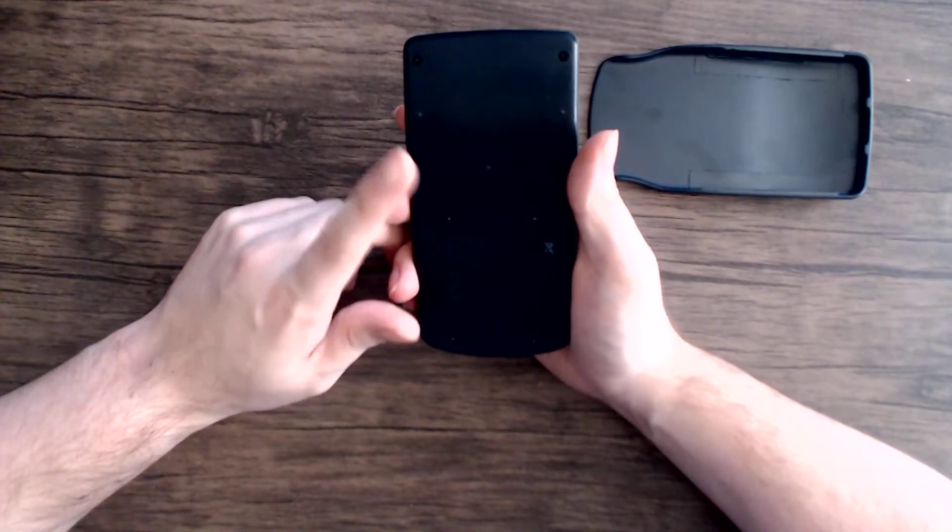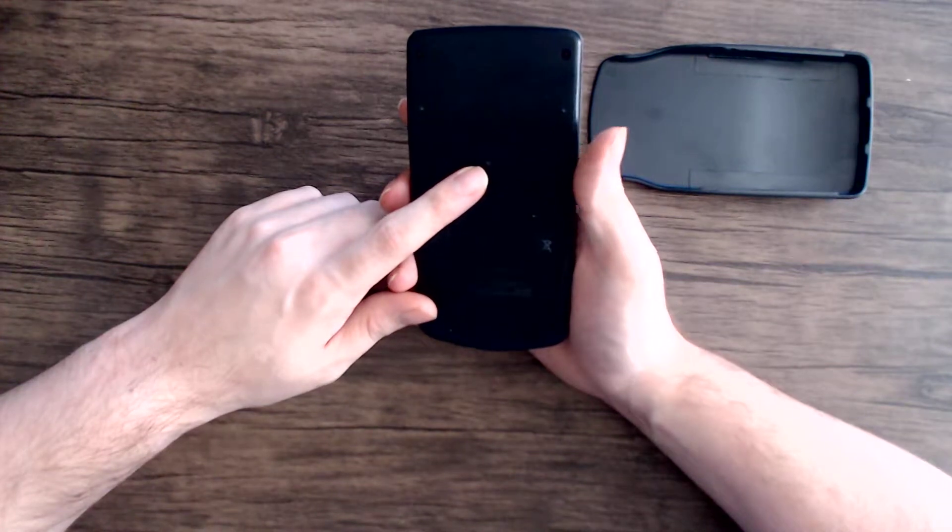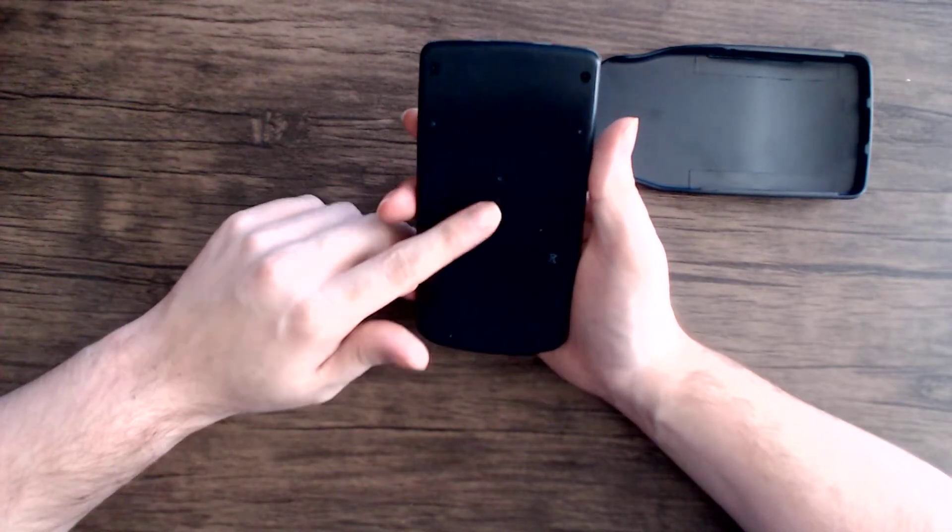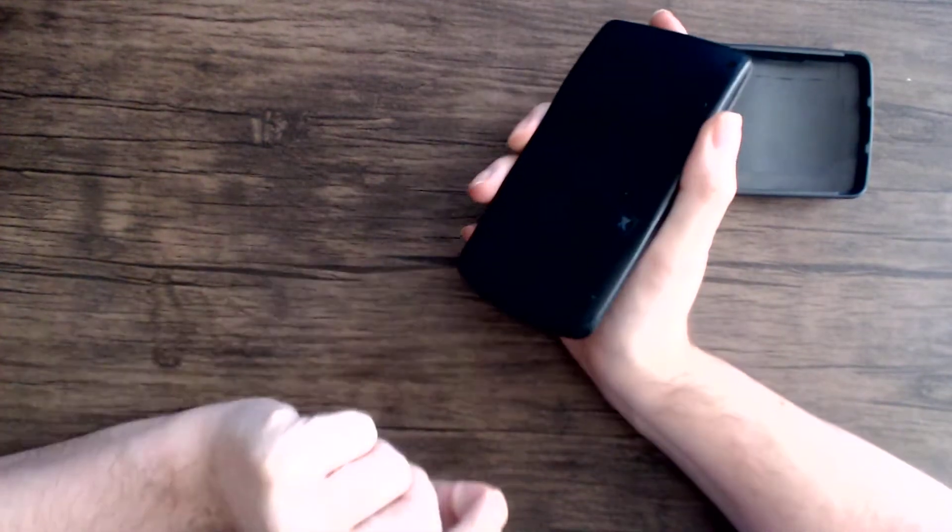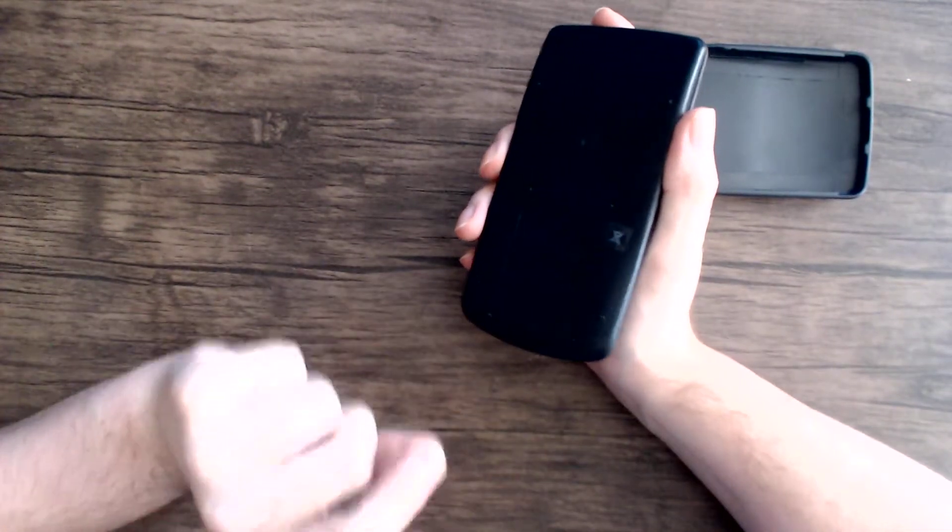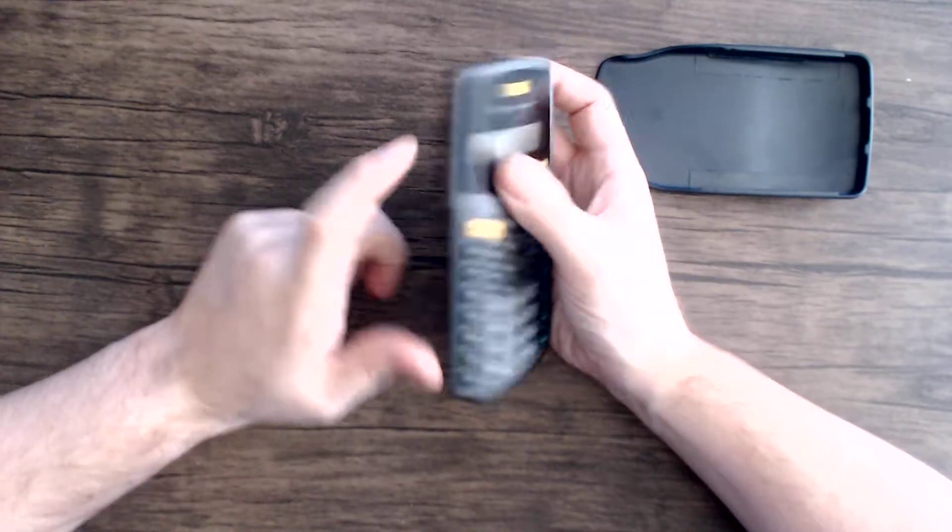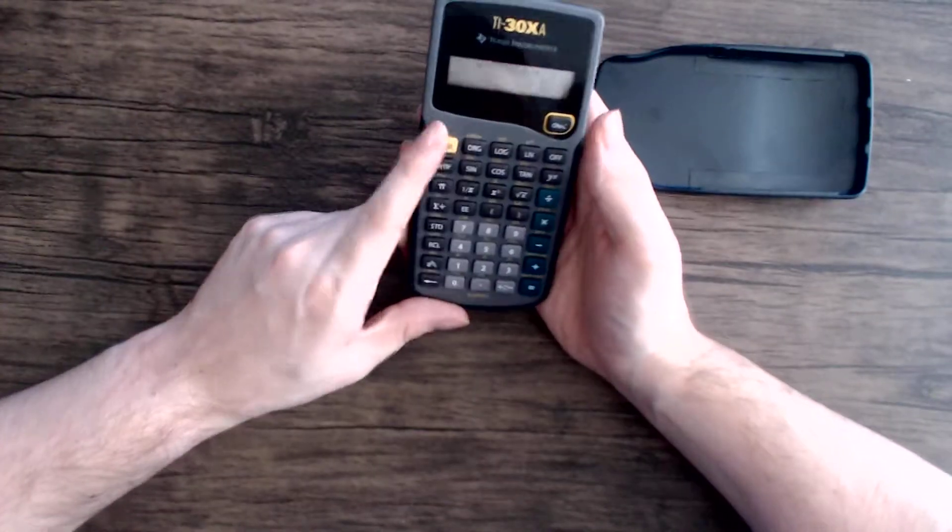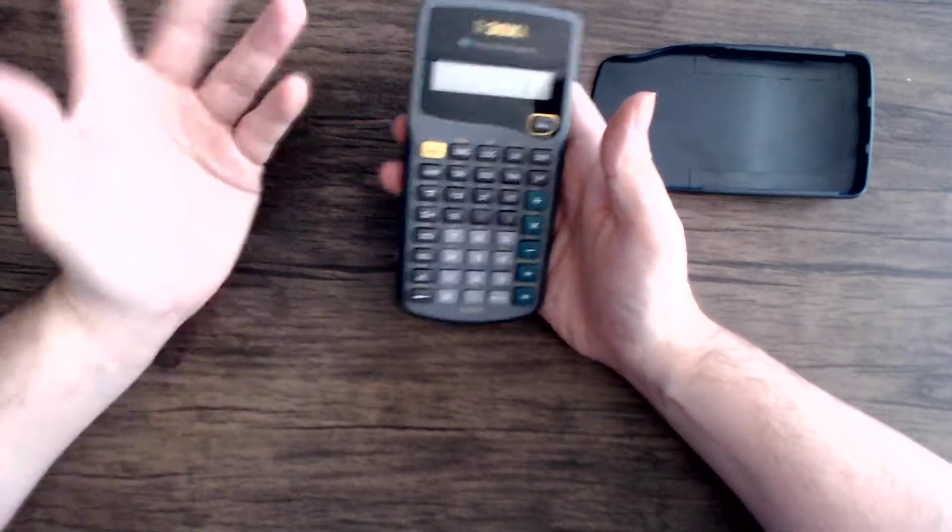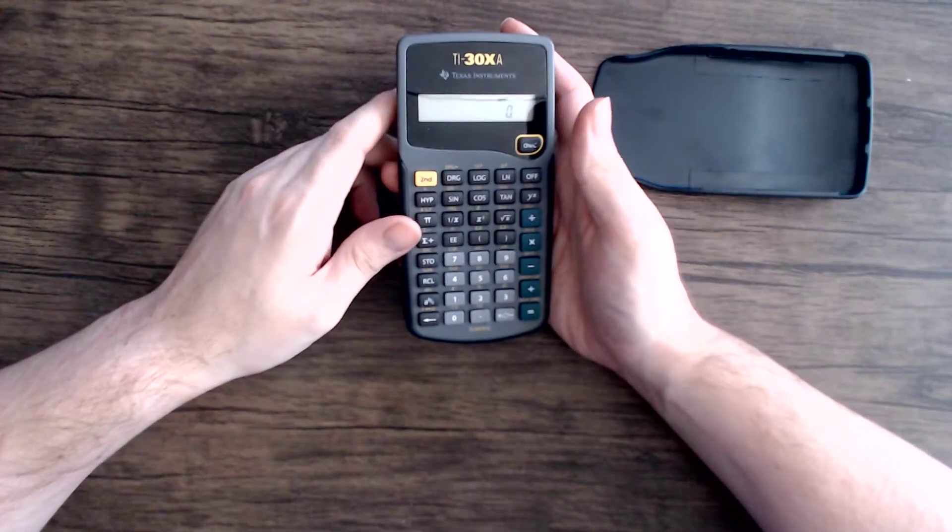Or do what that calculator company did—I forget what they were called—but they did the Time Master. They had a little slide out tab to access the battery. That was cool and definitely my preferred way of having batteries, if you're going to have batteries at all. Personally, I'd just go with solar or something you'd plug in.